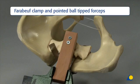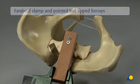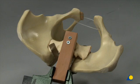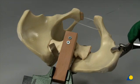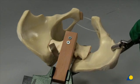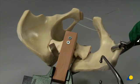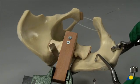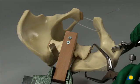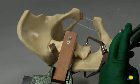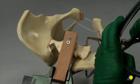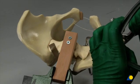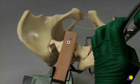Reduction using a Faraburf clamp and the pointed ball-tipped forceps. As an alternative reduction technique, the iliac crest can be grasped and manipulated with a Faraburf clamp. In addition, an asymmetric or symmetric pointed ball-tipped forceps is inserted with one branch on the outer surface of the iliac bone and the other branch on the anterior aspect of the sacral ala.